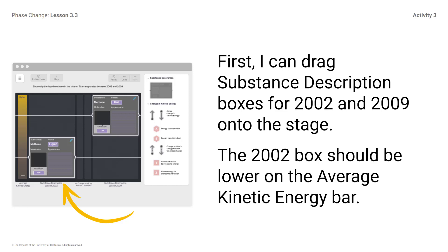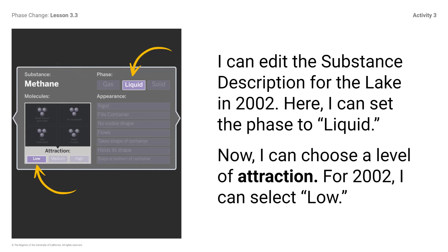The 2002 box should be lower on the average kinetic energy bar. Remember, we already know that more energy was transferred into the lake between 2002 and 2009 because of summer. I can edit the Substance Description for the lake in 2002. Here, I can set the phase to liquid. Now I can choose a level of attraction. For 2002, I can select Low. Remember that the liquid oxygen article said that the attraction between methane molecules is low, which makes it difficult for methane to condense.